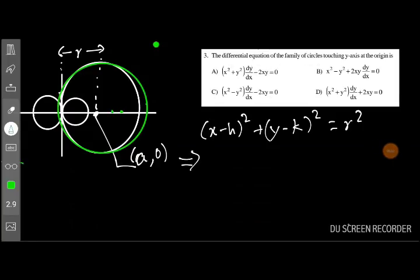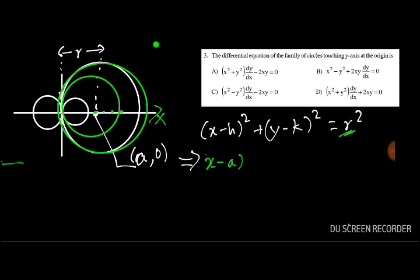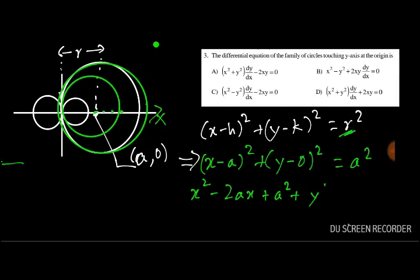Question 3: the differential equation of the family of circles touching the y-axis at the origin. The circles touch the y-axis, so their centers lie on the x-axis with coordinates (a, 0). The general circle equation is (x - a)² + y² = a². Expanding: x² - 2ax + a² + y² = a², so x² - 2ax + y² = 0.